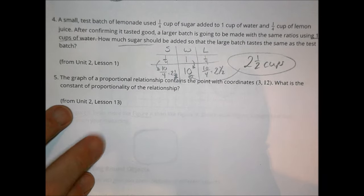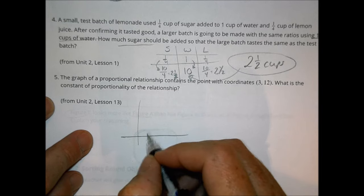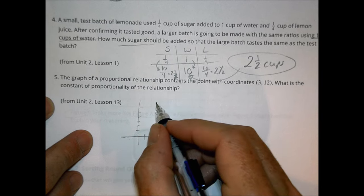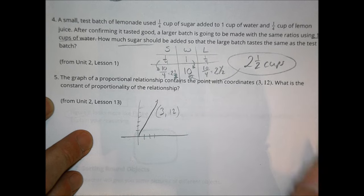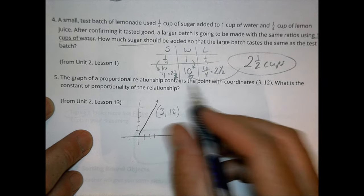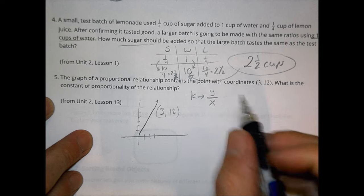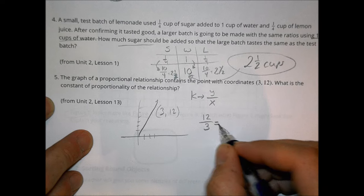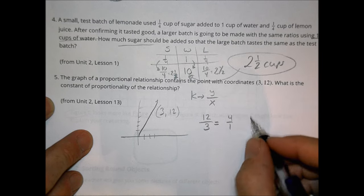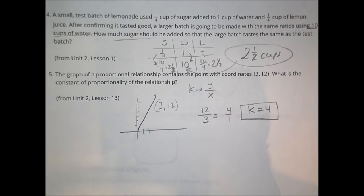Number five: the graph of a proportional relationship contains the point with coordinates (3, 12). What is the constant of proportionality? Our k value is always y over x. Here y is 12 and x is 3, and 12 over 3 equals 4. So the constant of proportionality is 4. That's review from Unit 2. Hope that helps with your homework and lesson today — good luck and we'll see you next time.